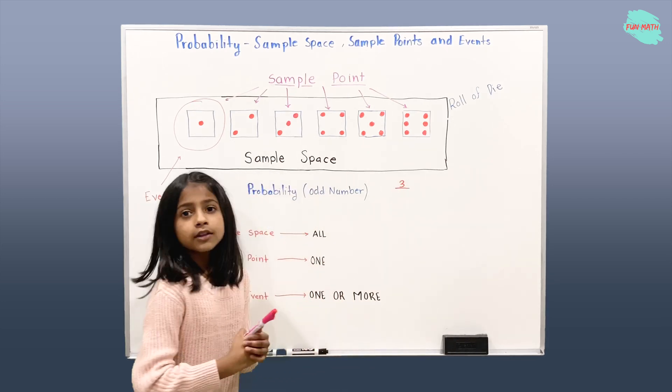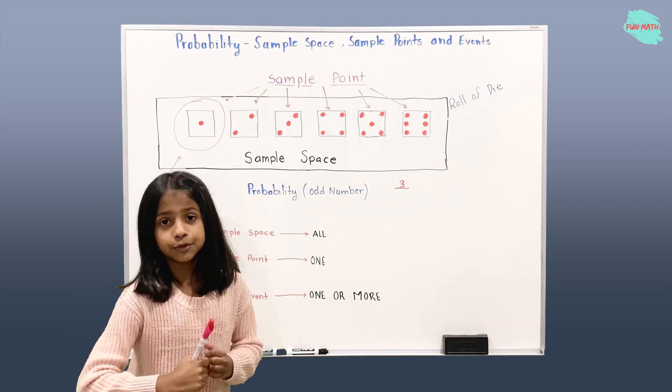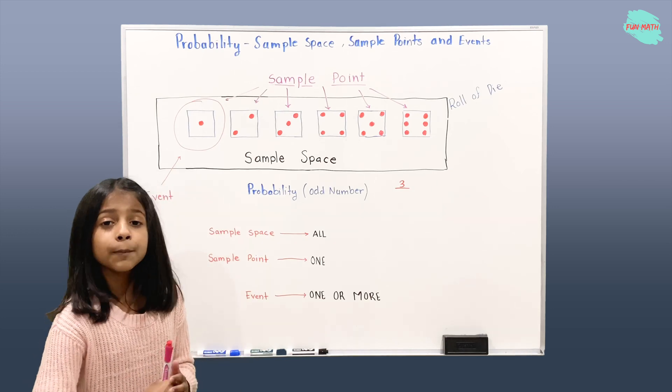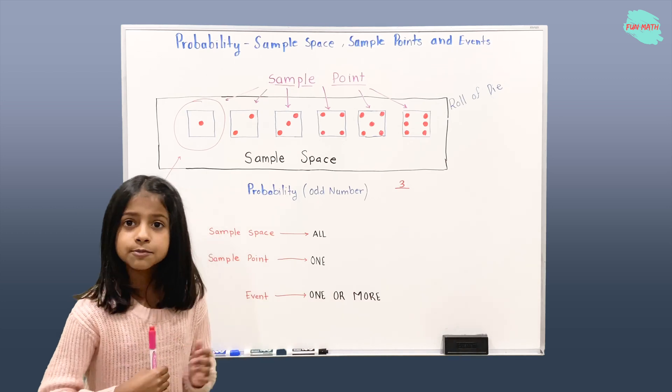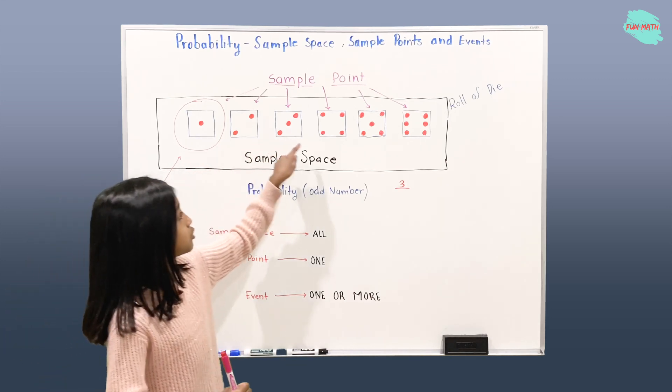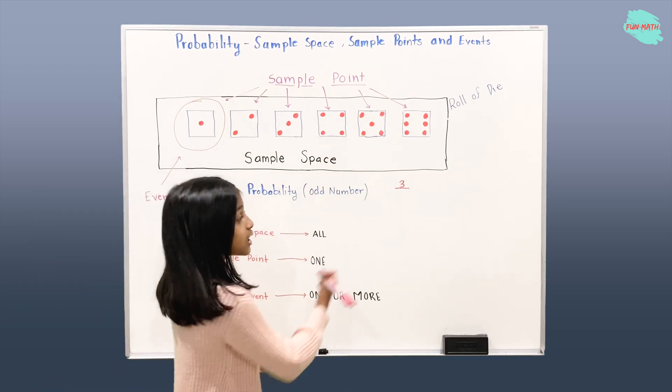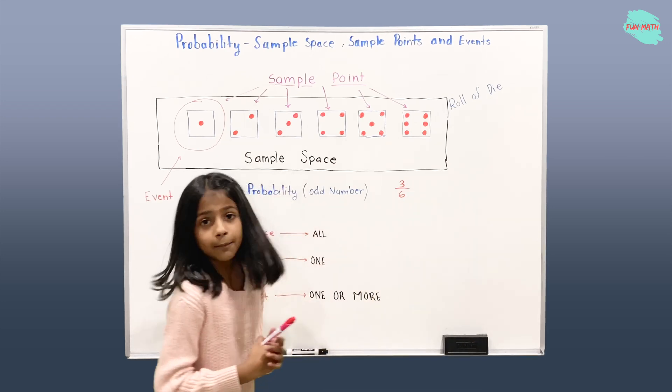Over, that's why we have 3 as our numerator. Now what will be our denominator? Our denominator is all the outcomes we have. How many outcomes do we have? We have 1, 2, 3, 4, 5, and 6. That's why we have 6 as our denominator.